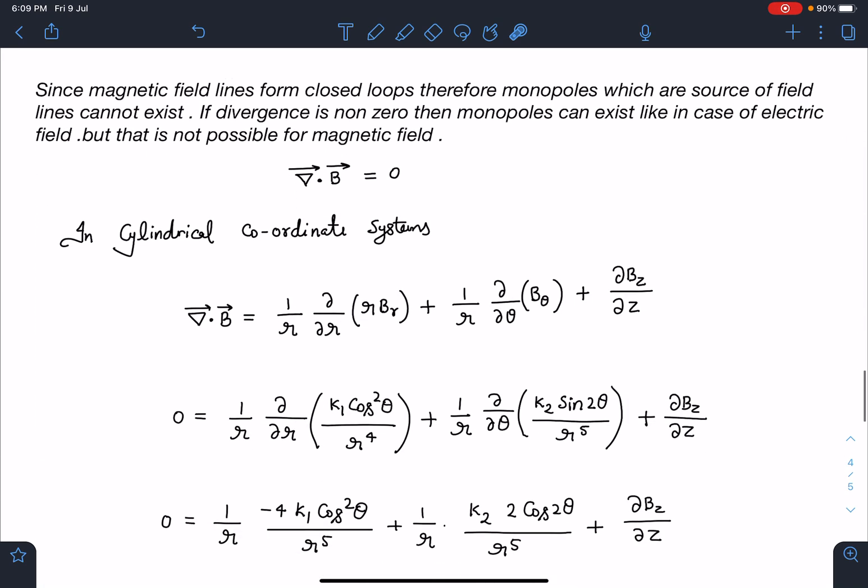However, the discussion of divergence - it's not important for JEE Advanced, but in general you must know. So here the idea is, since magnetic field lines form closed loops, therefore monopoles which are the source of field and field lines cannot exist. So that's the reason for divergence to be zero. If divergence is non-zero then monopoles can exist like in case of electric field, but not in case of magnetic field.